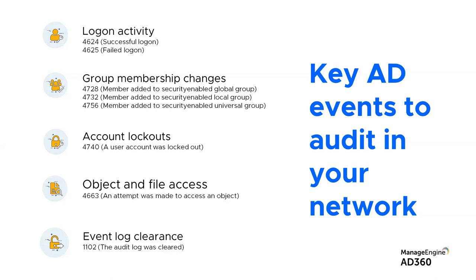Logon activity is a great measure to identify anomalies if you have context. Look for deviations like repeated logon failures — which could indicate an attacker trying to crack through — or logons happening during non-business hours, or logons made on inactive accounts with critical privileges. Start by monitoring two events: successful logons and failed logons with event IDs 4624 and 4625.